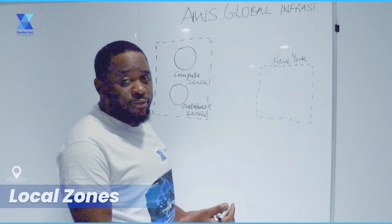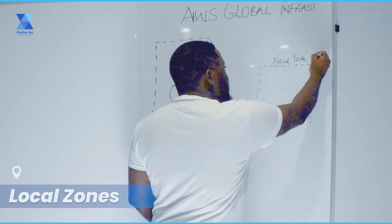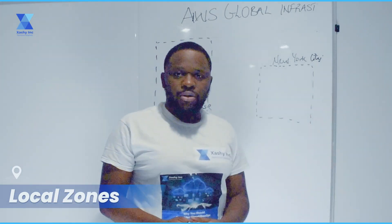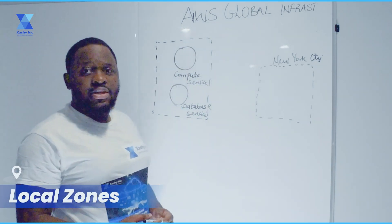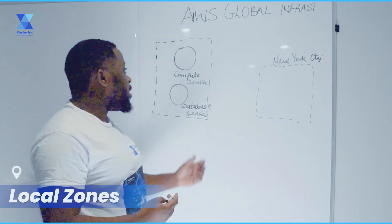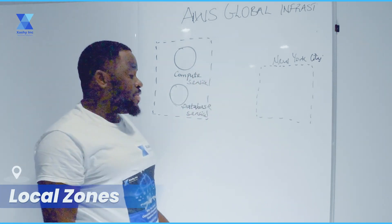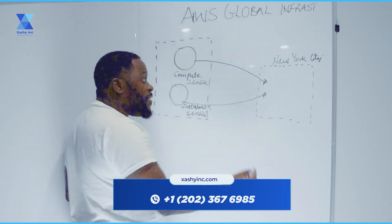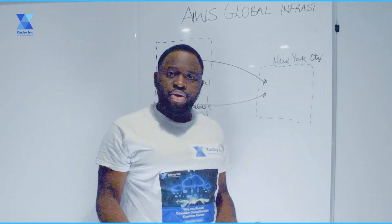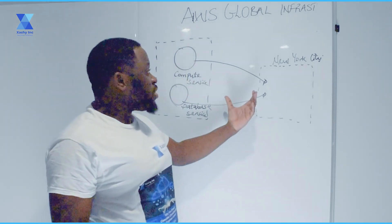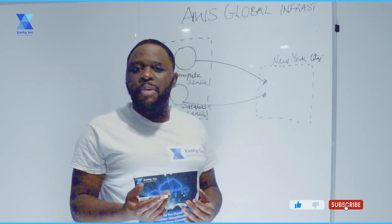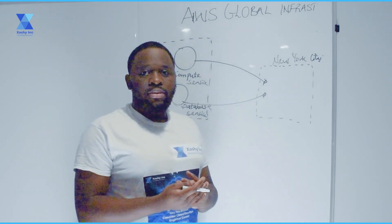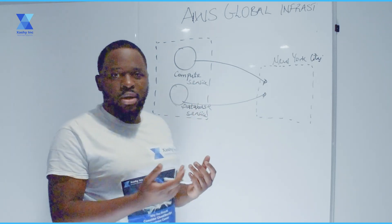For example, let's say we have New York as a city and there are no data centers or regions around New York. AWS has developed local zones in such a way that compute services and other services are made available and very close to the population of New York, so that customers in New York hosting applications or storing data can do so very fast with low latency. That is pretty much what the concept of local zones is.